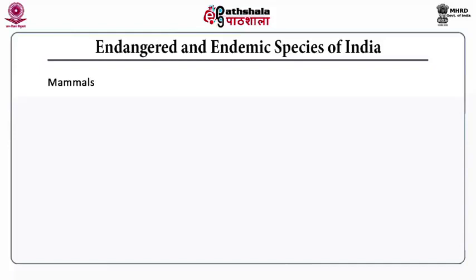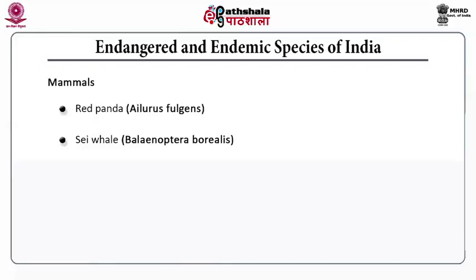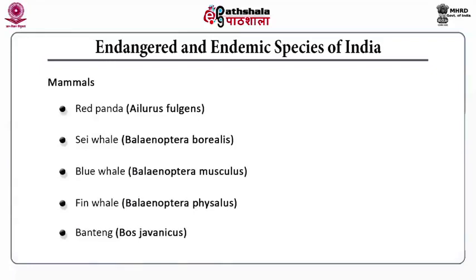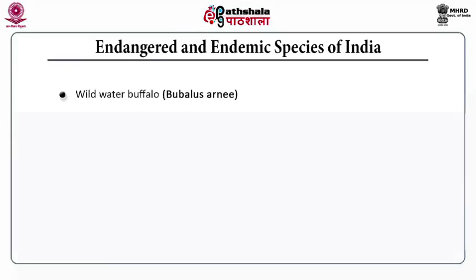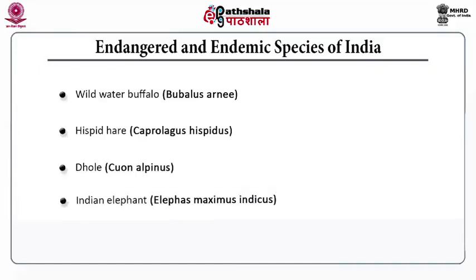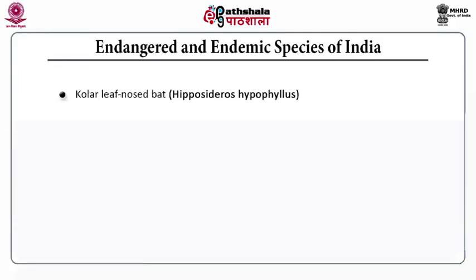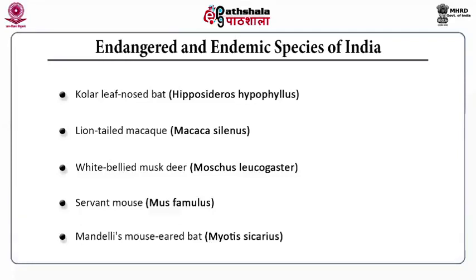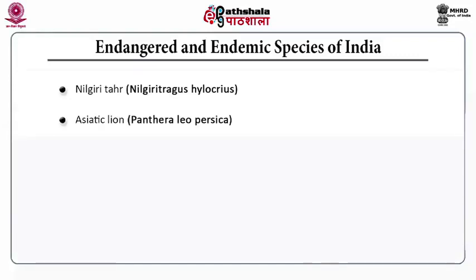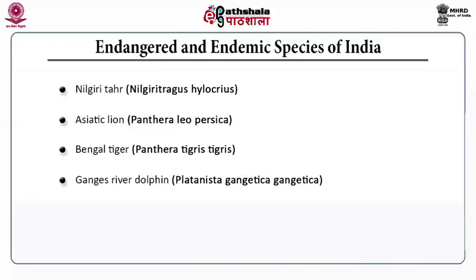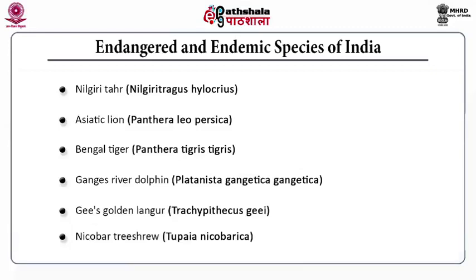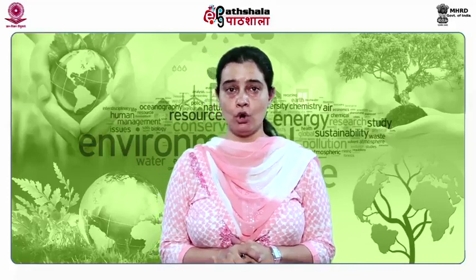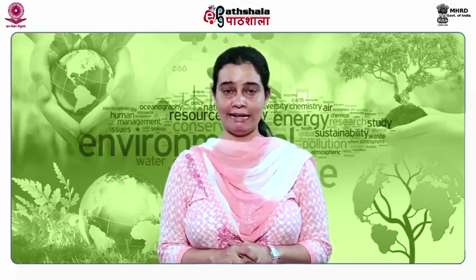Endangered and endemic mammals include: red panda, sea whale, blue whale, fin whale, venting (also known as Bos javanicus), wild water buffalo, hispid hare, dhole, Indian elephant, woolly flying squirrel, collar leaf-nosed bat, lion-tailed macaque (scientific name: Macaca silenus), white-bellied musk deer, Nilgiri tahr, Asiatic lion (Panthera leo persica), Bengal tiger (Panthera tigris tigris), Ganges river dolphin (Platanista gangetica gangetica), golden langur, and Nicobar tree shrew. These scientific names are important as they appear in competitive questions.